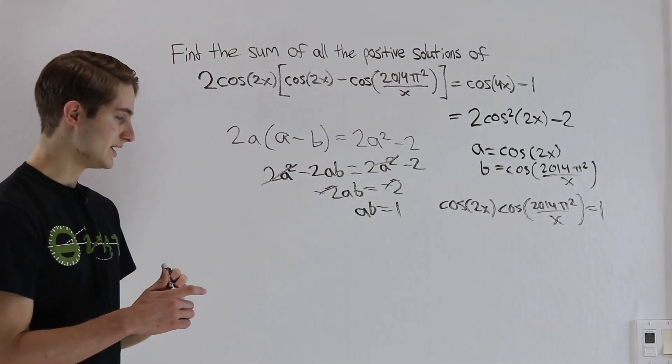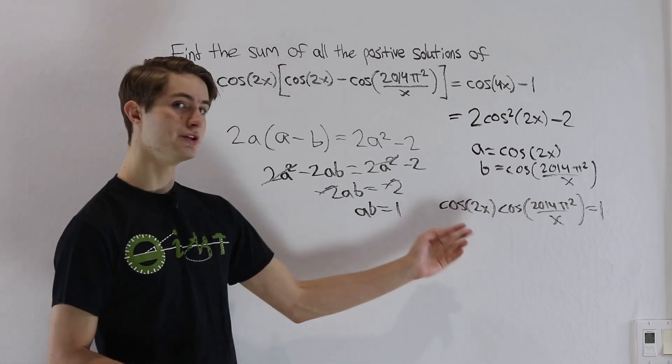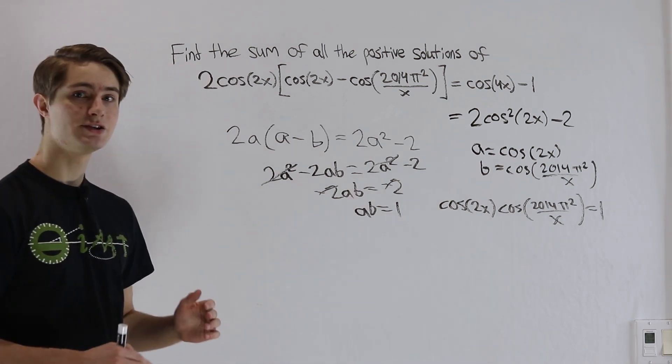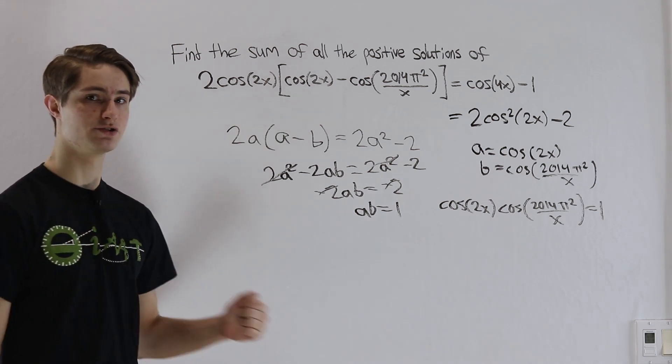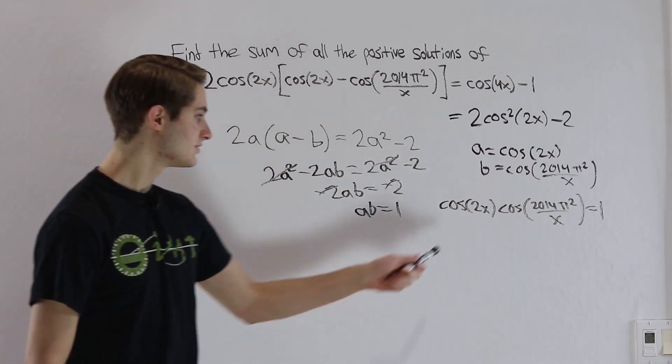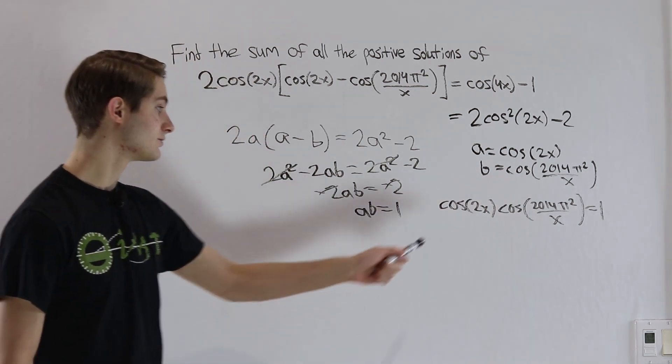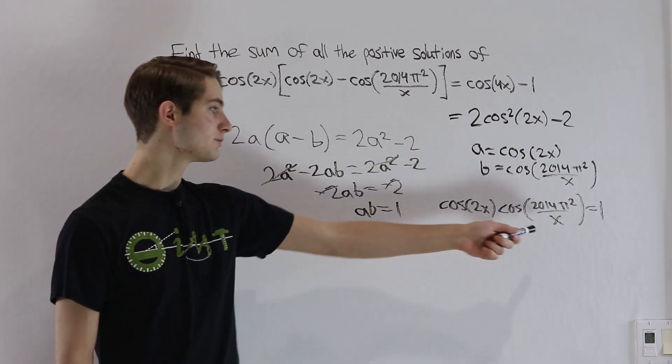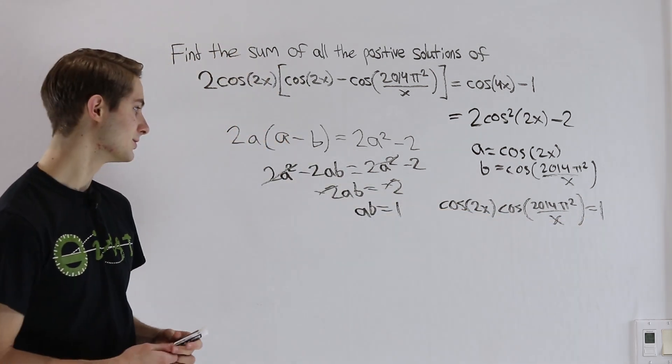So let's think about when that's true. First of all, remember that the cosine function, which we're only looking at real numbers here, has to be between negative 1 and 1. It can't be any bigger or any smaller. What that means is both of these cosines have to be equal to 1. Because if one of them were less than 1, then the other one would have to be greater than 1 to compensate and get us back to 1. But that's not possible.